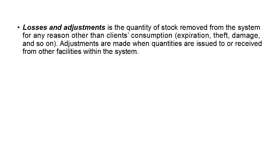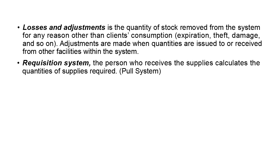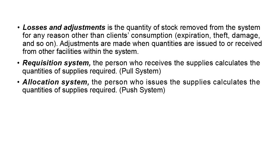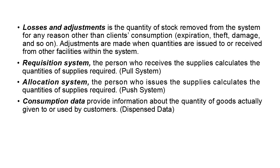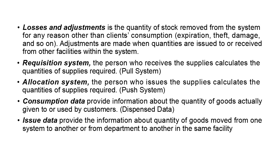In a hospital with multiple drug stores, there will be one main store from which drugs are supplied to the sub stores. If one store has excess drugs and another has none, it can ask another store to provide that — this comes under adjustment. In the requisition system, the store requiring certain drugs writes the drug name and quantity and asks the main store to provide it. In the pool system, the main store provides certain drugs in certain quantities to different sub stores on its own.